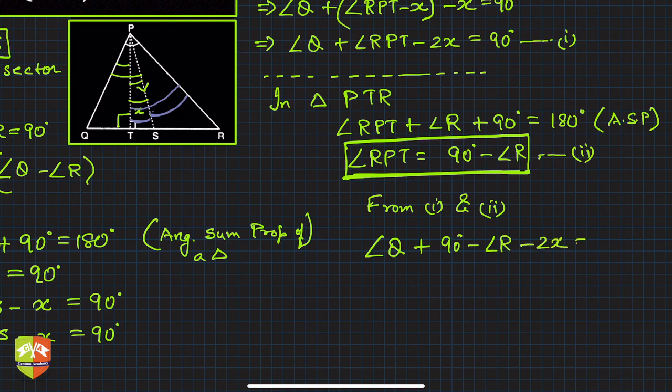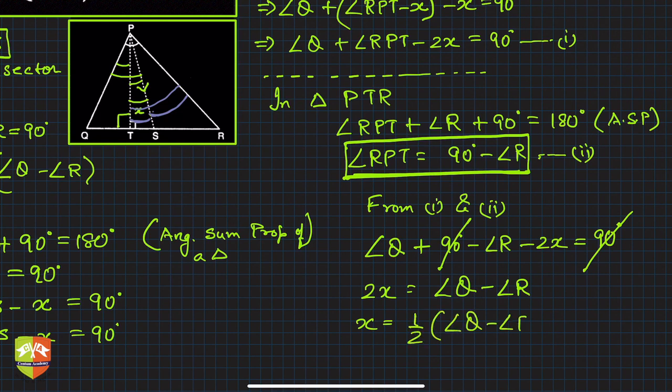Minus 2x is 90 degrees, correct? From 1 and 2. So this 90, this 90 will go, and we'll get 2x is equal to ∠Q - ∠R. And hence x is half (∠Q - ∠R).